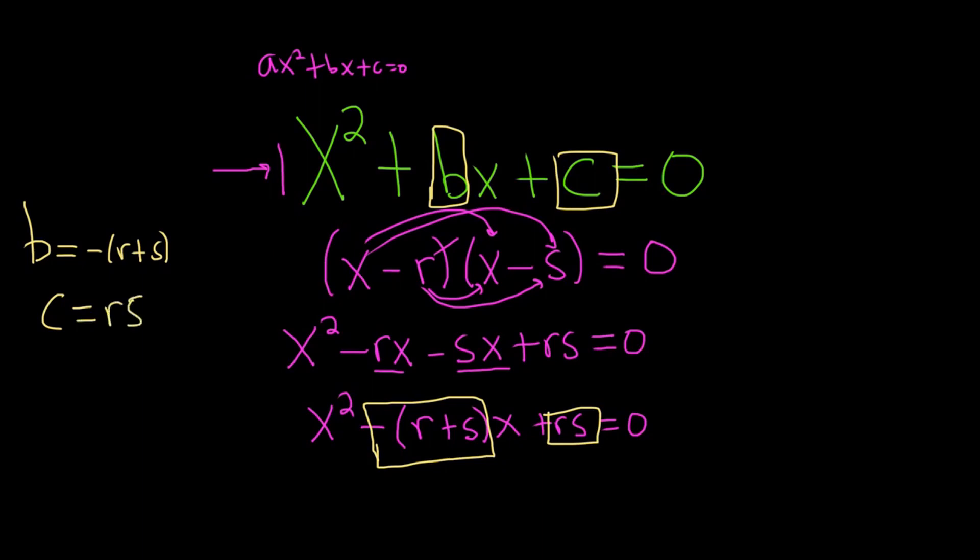So the way Po-Shen Loh does it, he now solves for negative b. So let's rewrite this as negative b equals r + s. So we have these two conditions here. So the roots add to negative b, r plus s are the solutions or the roots of this equation. So the solutions add to negative b and they multiply to c.